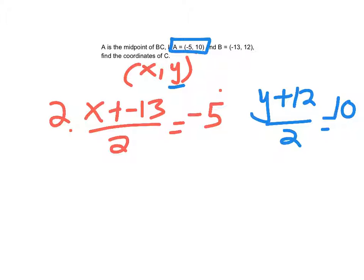And let's solve this algebraically. So I have x minus 13 equals negative 10. Add 13. I have x equals 3.